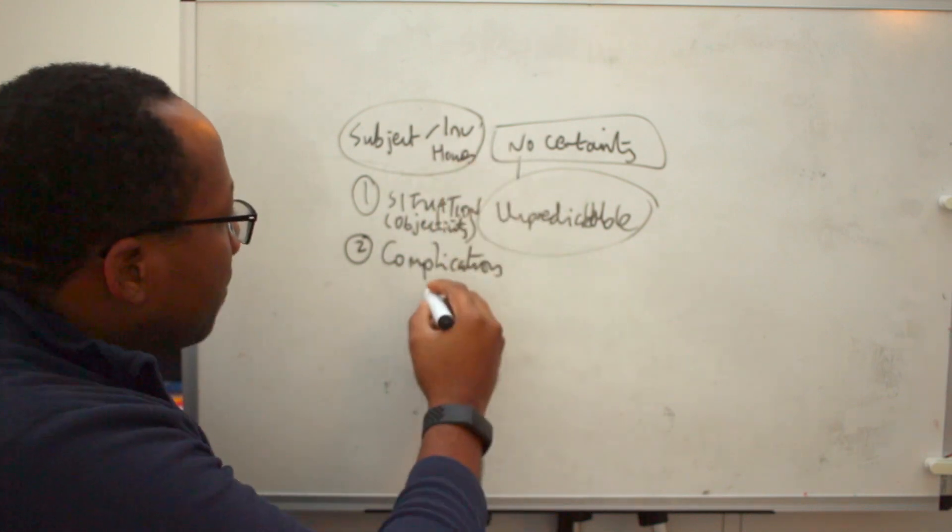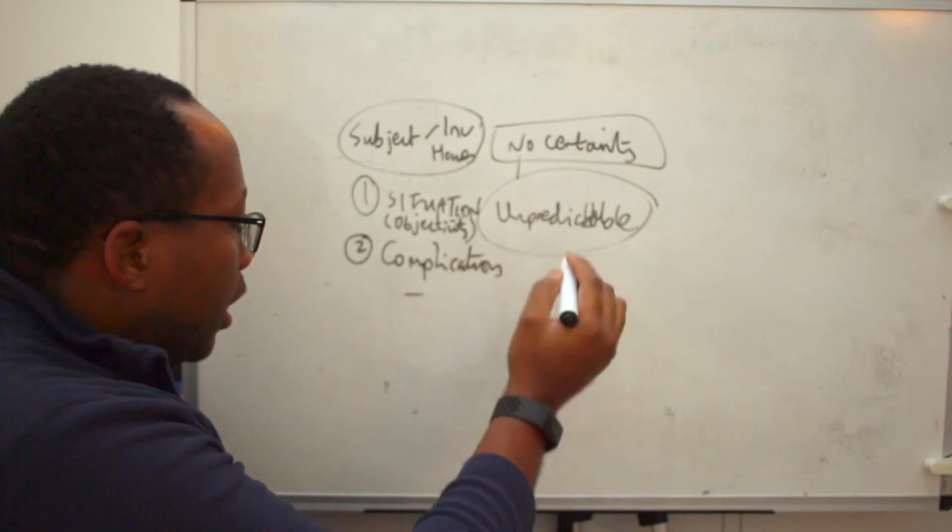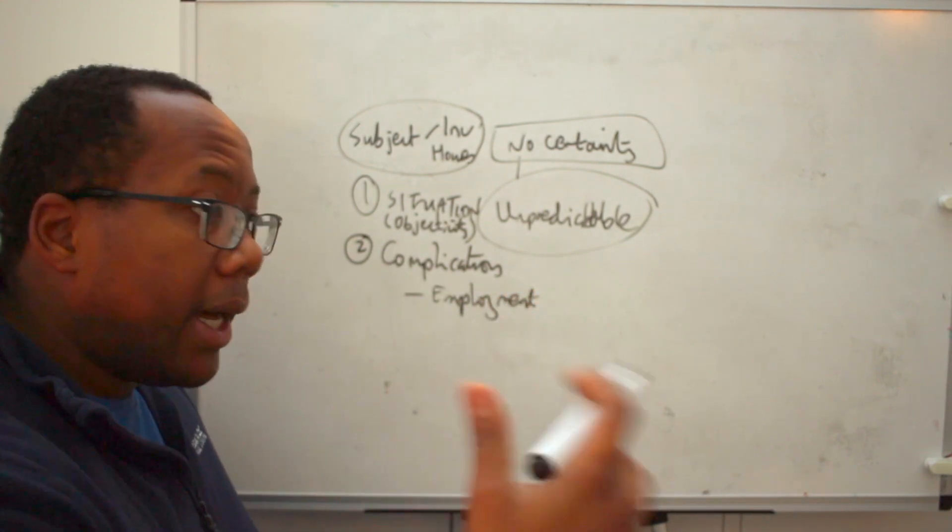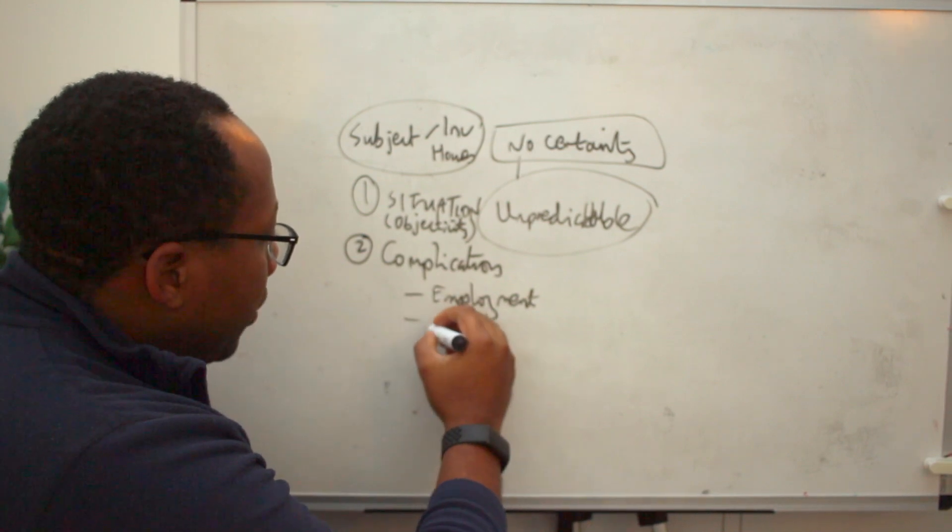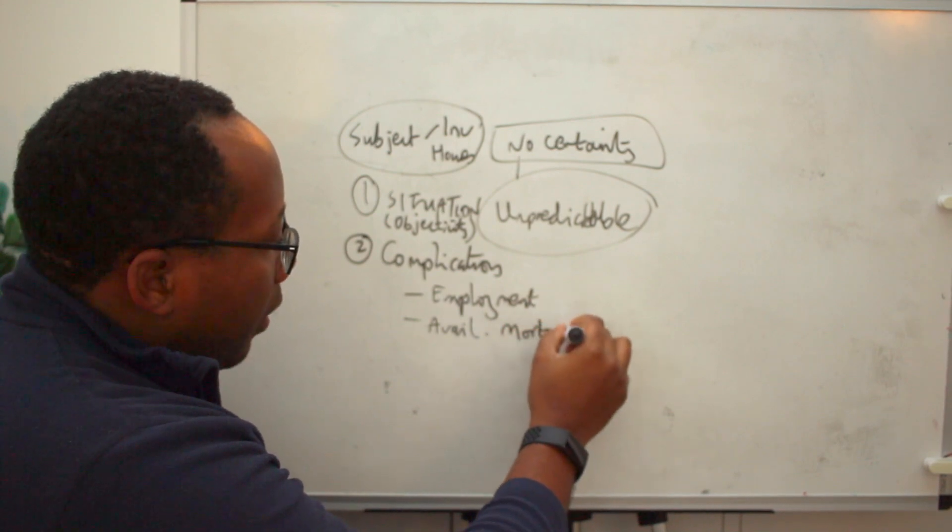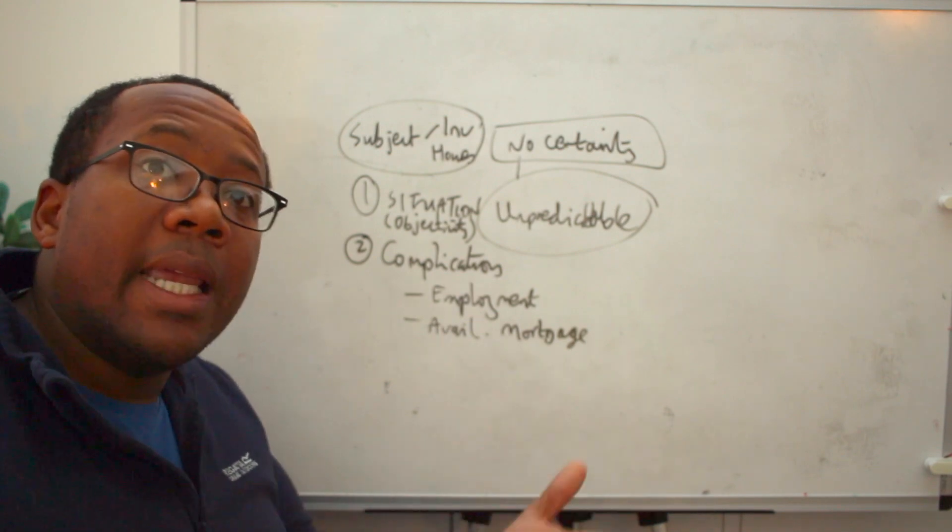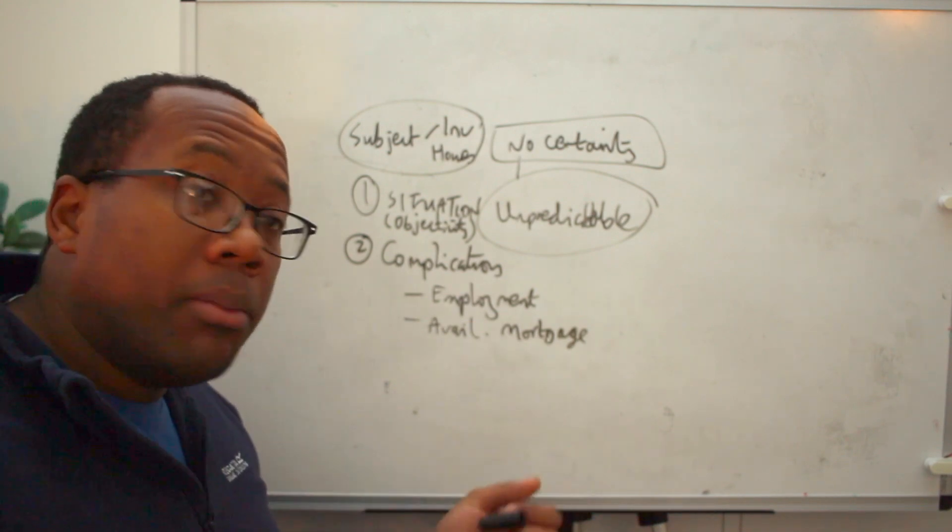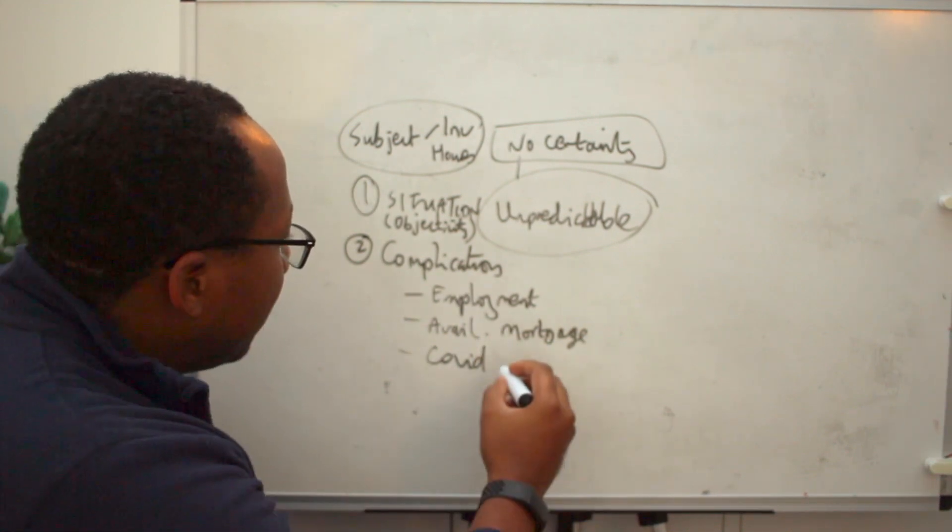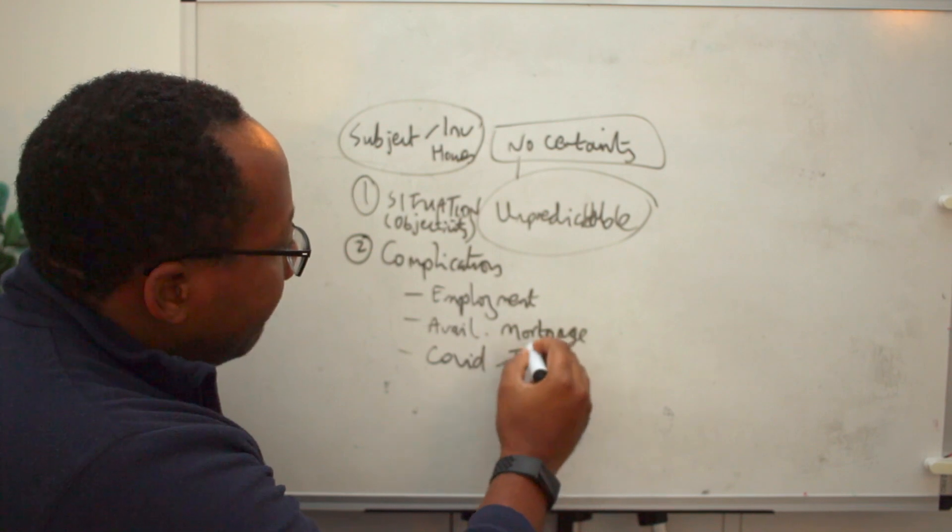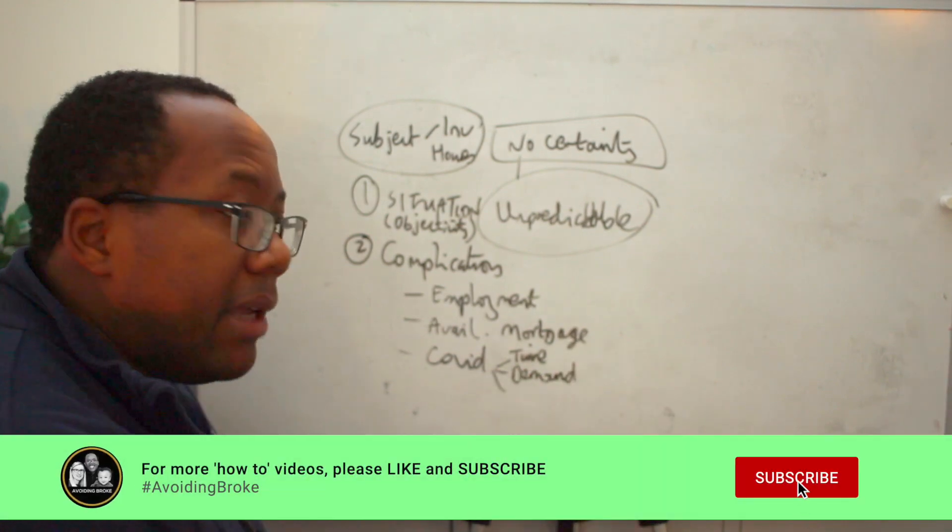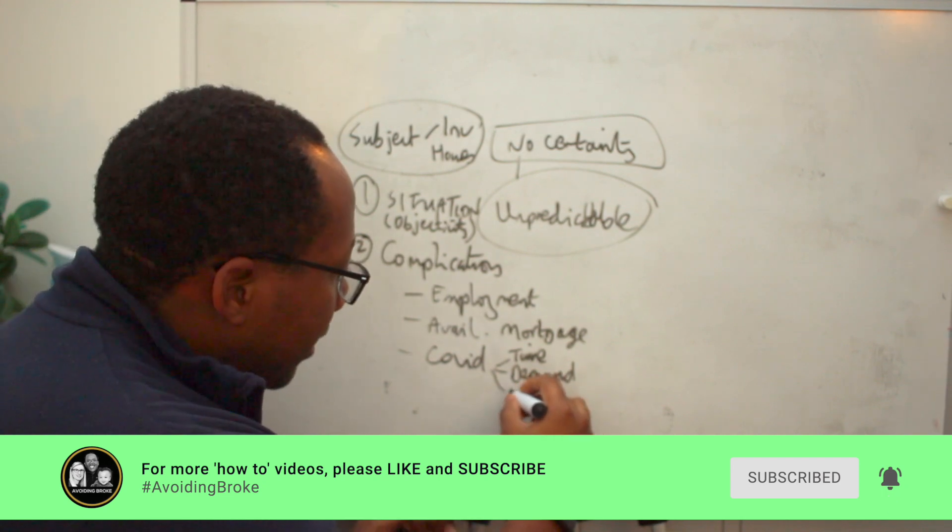So when you look at investment property, some of the complications include the level of employment, because obviously people need to be employed in order to be able to afford rental properties. It includes the availability of mortgages. So if I want to mortgage a property, I need to be able to have those mortgages available. If they're not there, you can't go and get the mortgage in order to do the investing. You've got general complications related to COVID. COVID is changing everything, including time. It is changing people's demand. This is time to get stuff done, it's changing demand, it may even change my affordability. Who knows? I hope it doesn't, but it may change that.